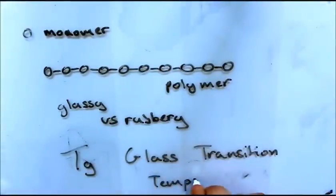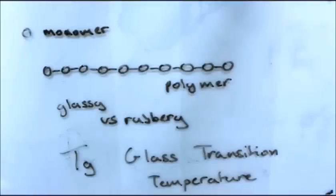Heating up a glassy polymer with sufficient energy will allow the chains in the polymer to move relative to each other. The temperature at which this occurs is called the glass transition temperature.